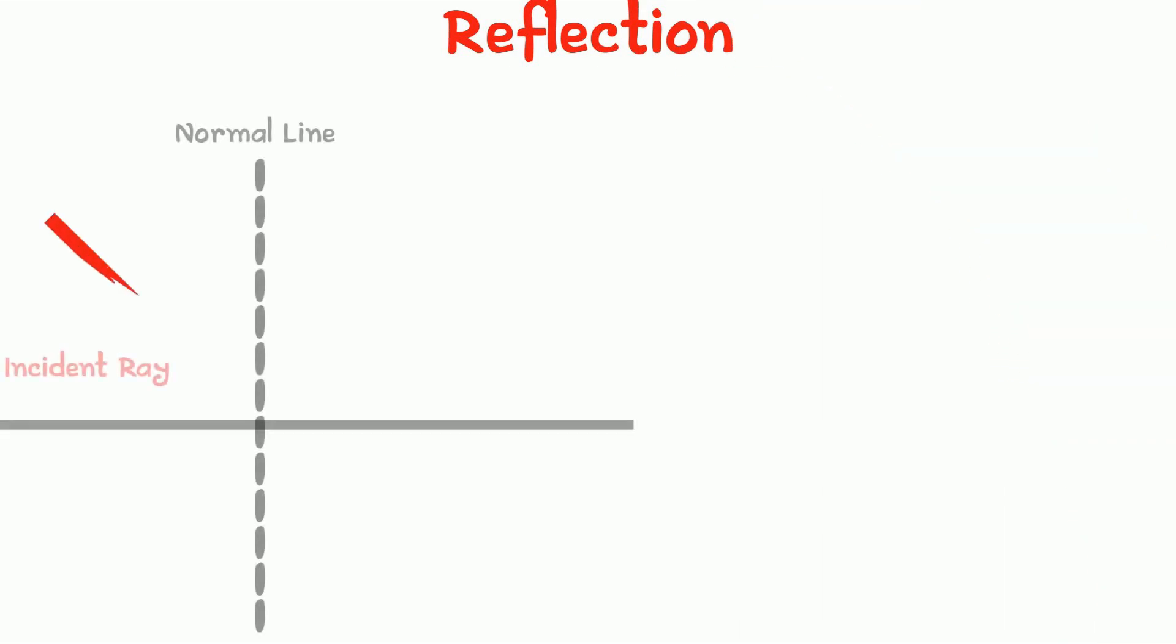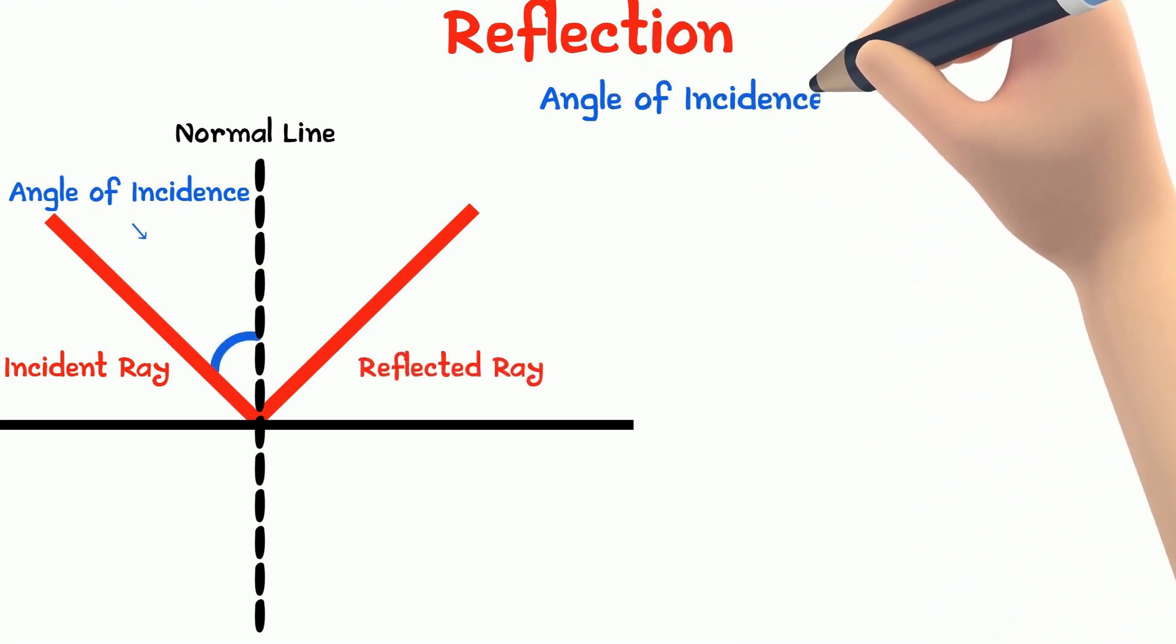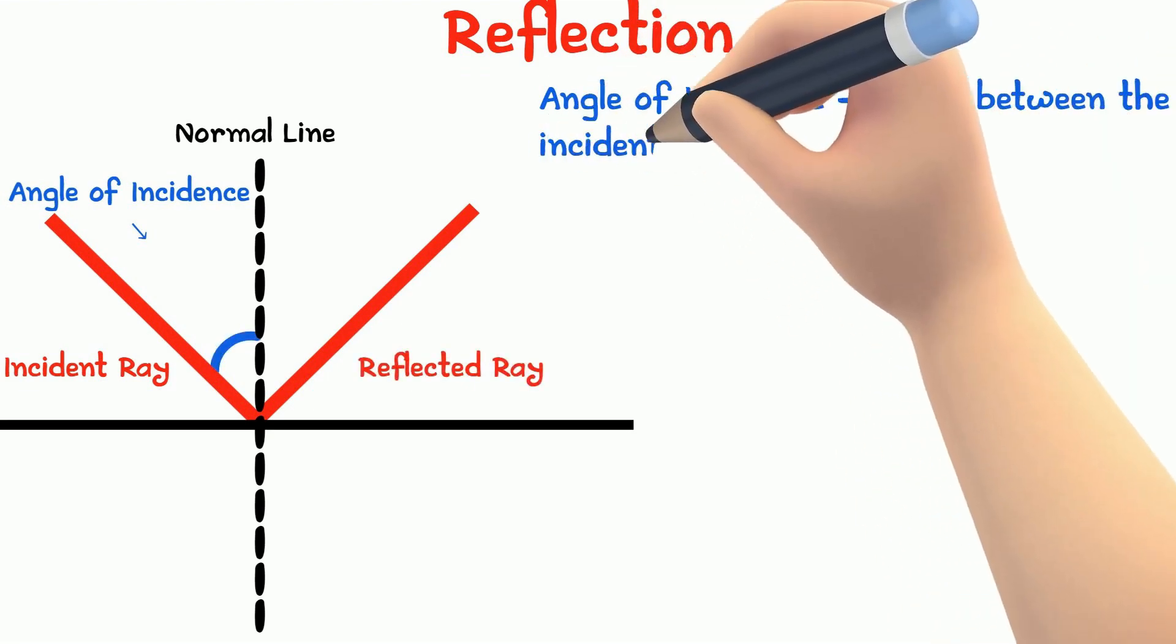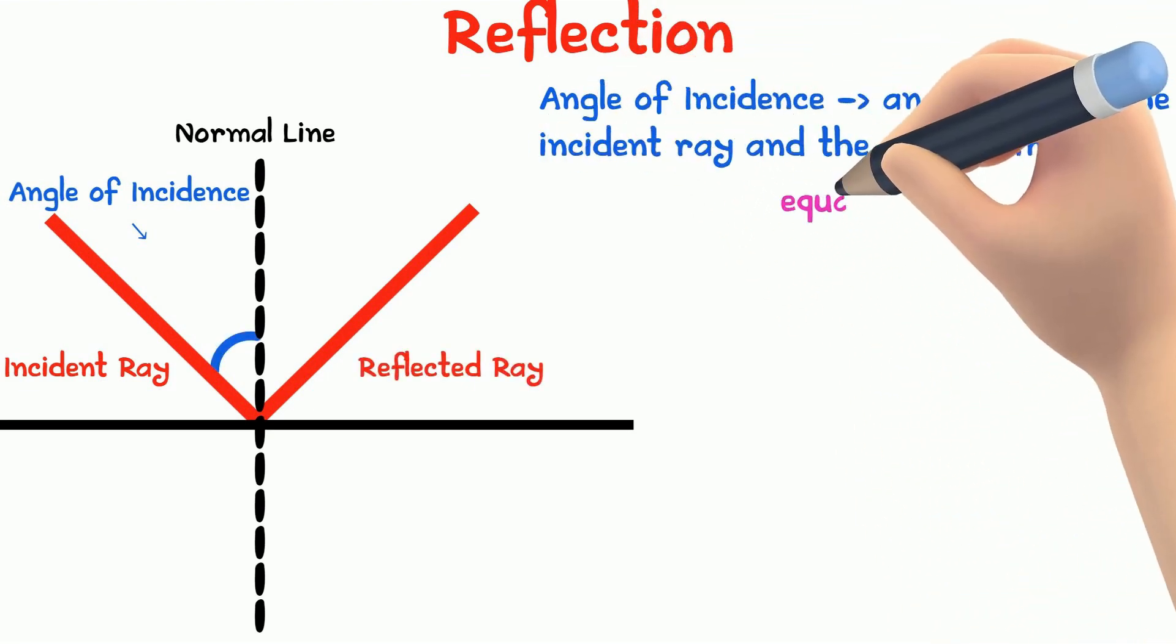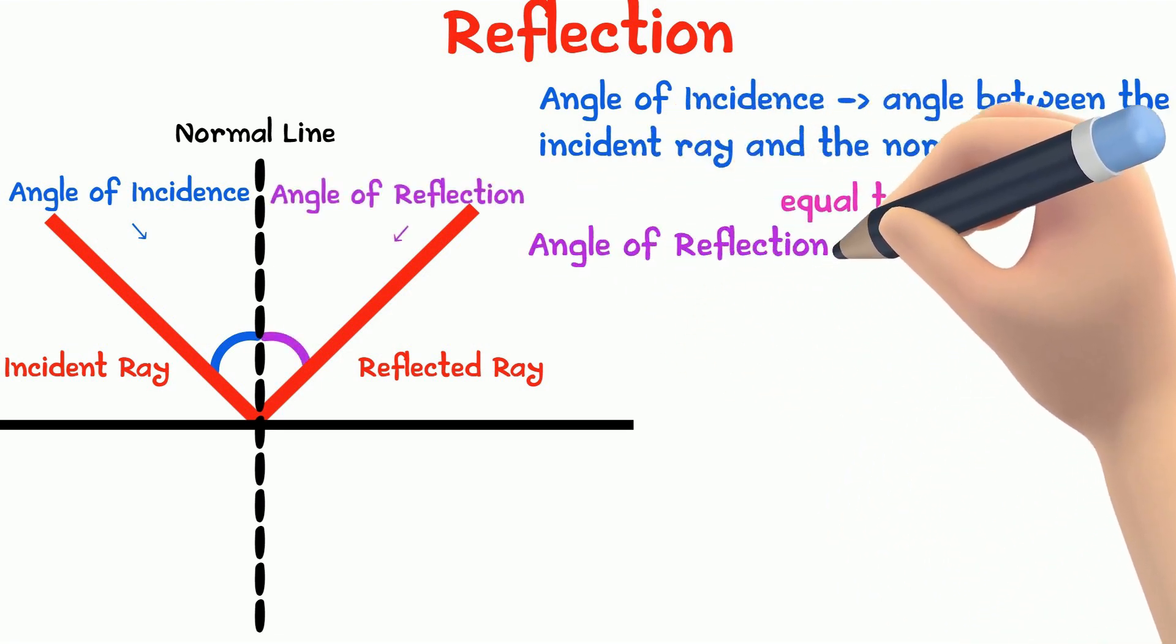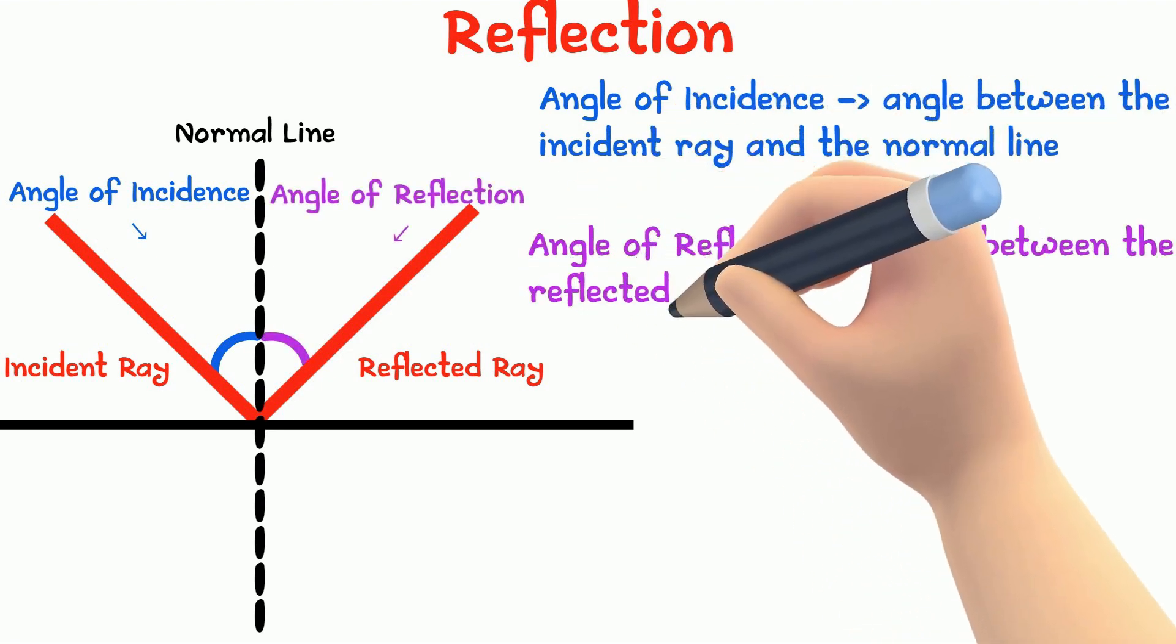When a light ray strikes a flat surface, it is reflected so that the angle of incidence, which is the angle between the incident ray and the normal line, is equal to the angle of reflection, which is the angle between the reflected ray and the normal line.